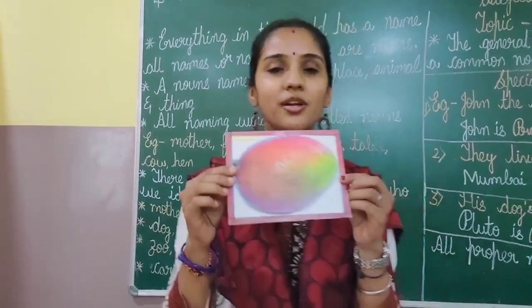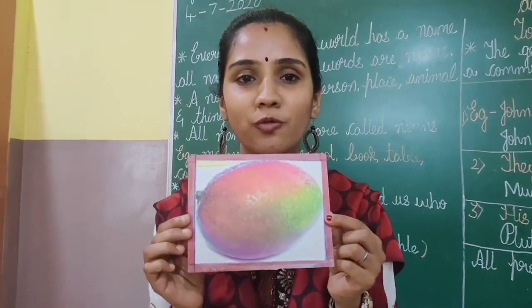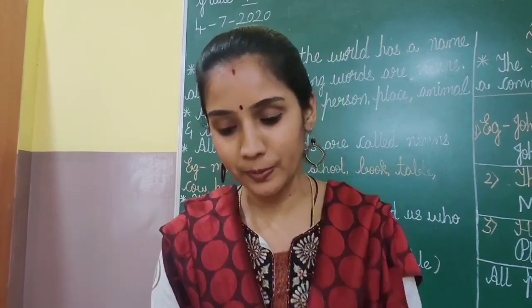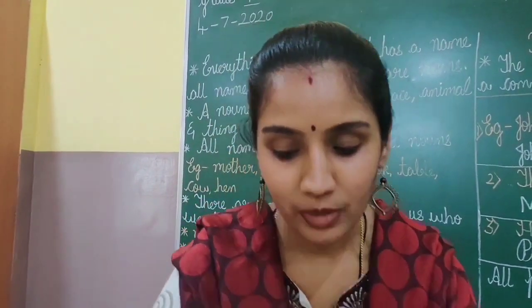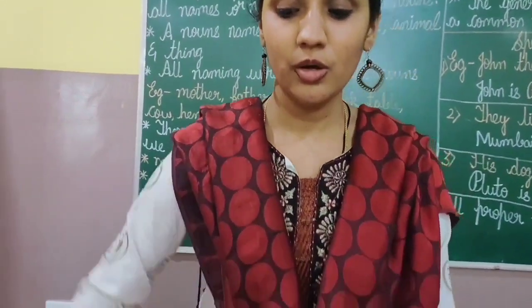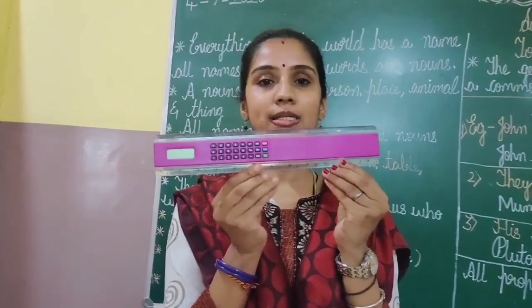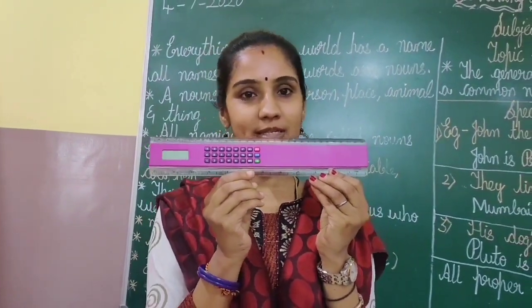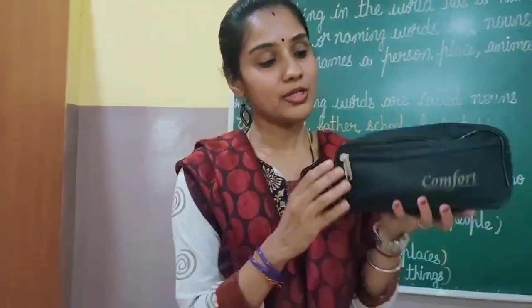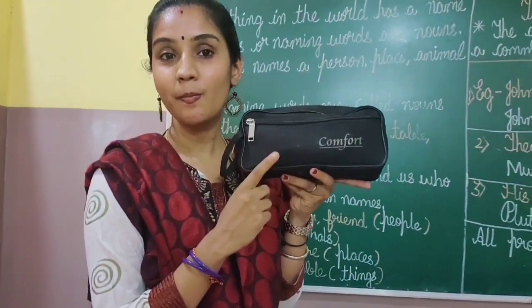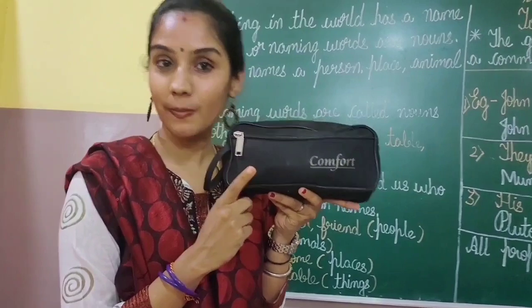What is this children? This is the name of a fruit. What is this? Mango — the picture of mango. What is this? Pomegranate. What is this? A scale. What is this? A pouch.